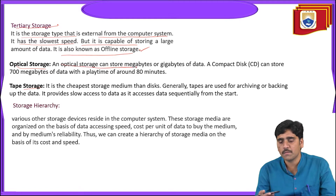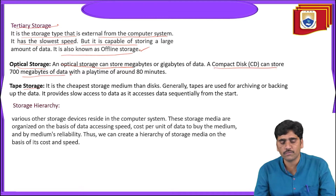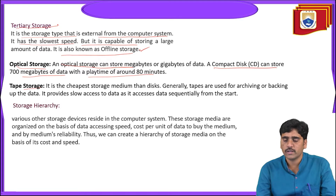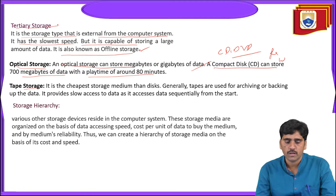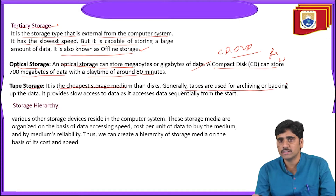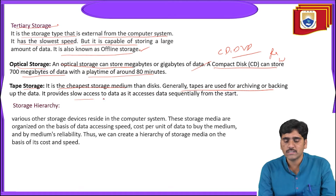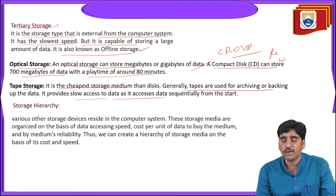An optical storage can store megabytes or gigabytes of data. A CD can store 700 megabytes of data with a playtime of around 80 minutes. Some CDs and DVDs are compatible with read and write options; some may not be compatible with both. Tape storage is the cheapest storage medium. Tapes are used for archiving or backing up data. It provides slow access to data as it accesses the data sequentially from the start.